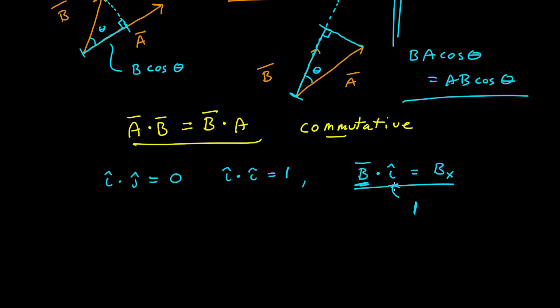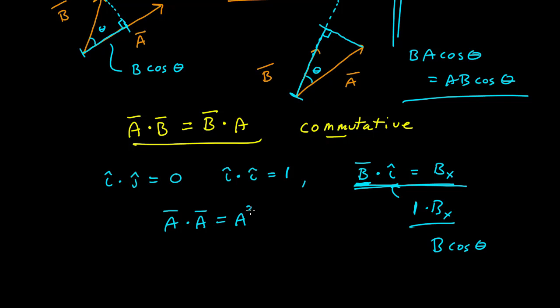b cosine theta, where theta is the angle between the b vector and the unit vector. And finally, any vector dotted with itself is equal to the magnitude of that vector squared. That's again easily seen with our geometric interpretation of the dot product.